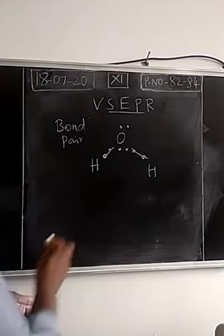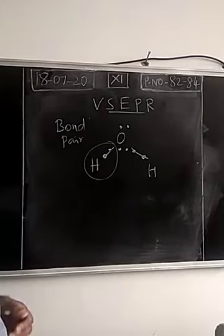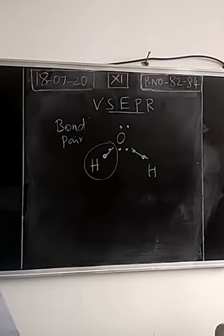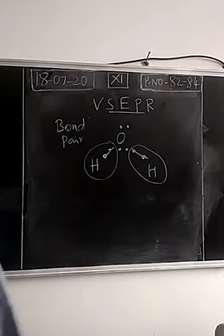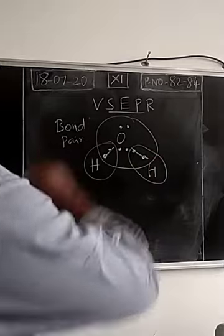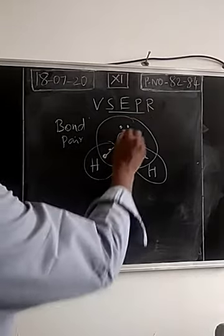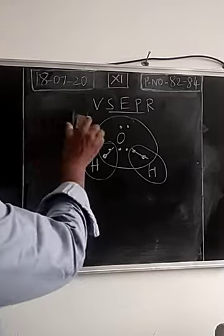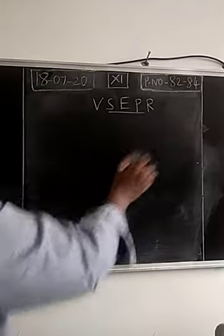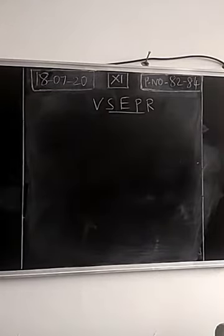Around each hydrogen in water, there are two electrons present in the form of bonded pair. Around oxygen, totally eight electrons are present — it obeys the octet rule. Four electrons are present in the form of lone pair, and the remaining four are present in the form of bonded pair. According to the second point of VSEPR theory, around each atom in a covalently bonded molecule, there will be electron pairs either in the form of bonded pair or lone pair.